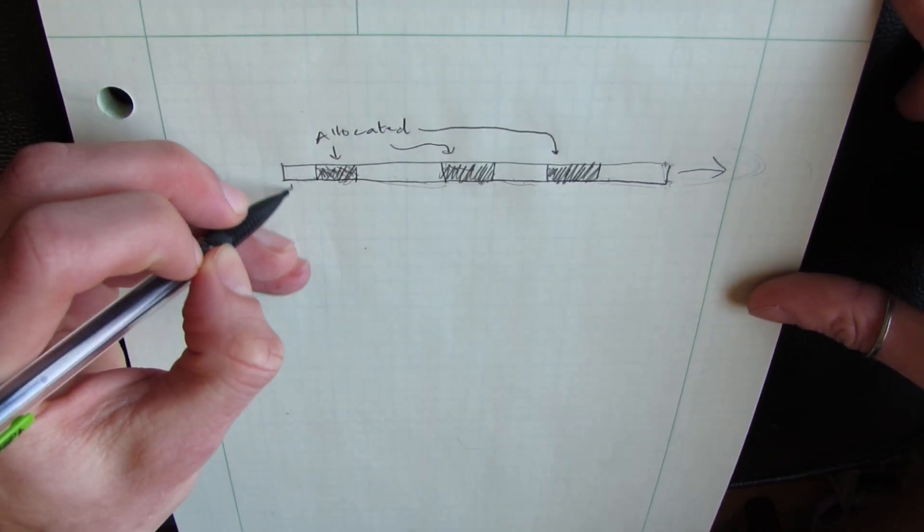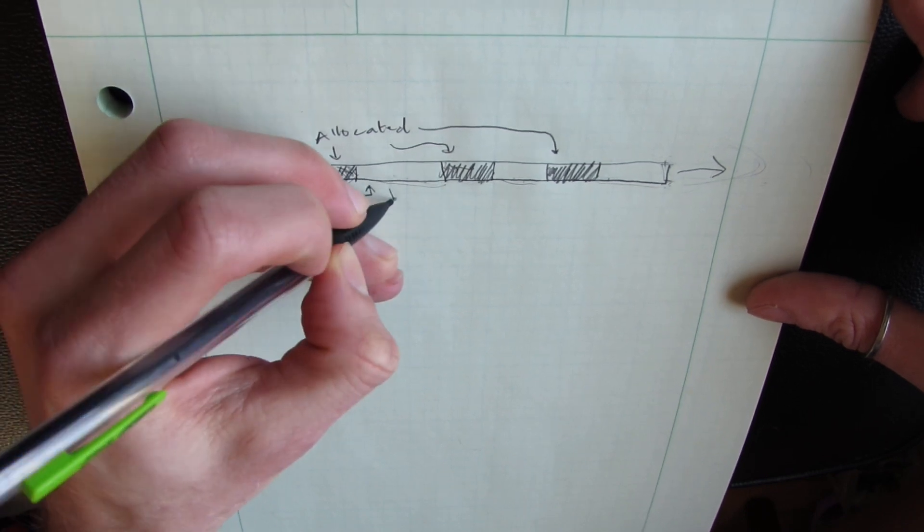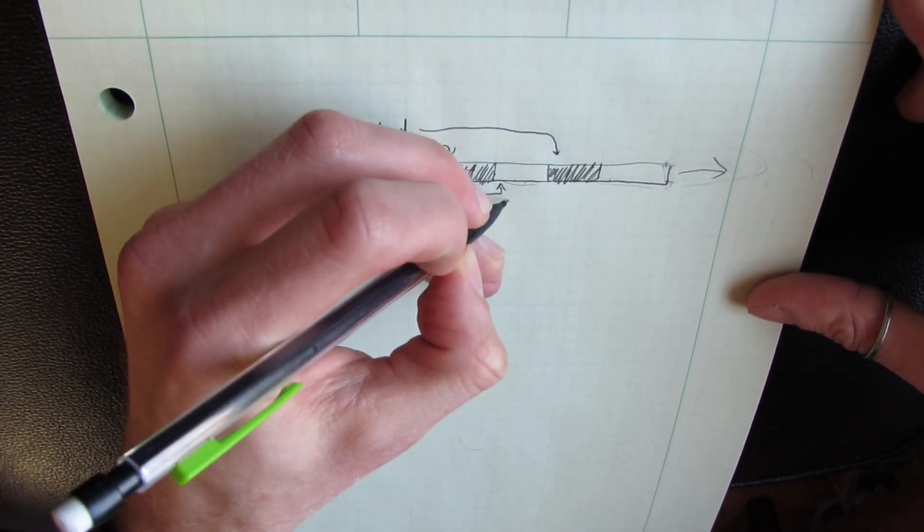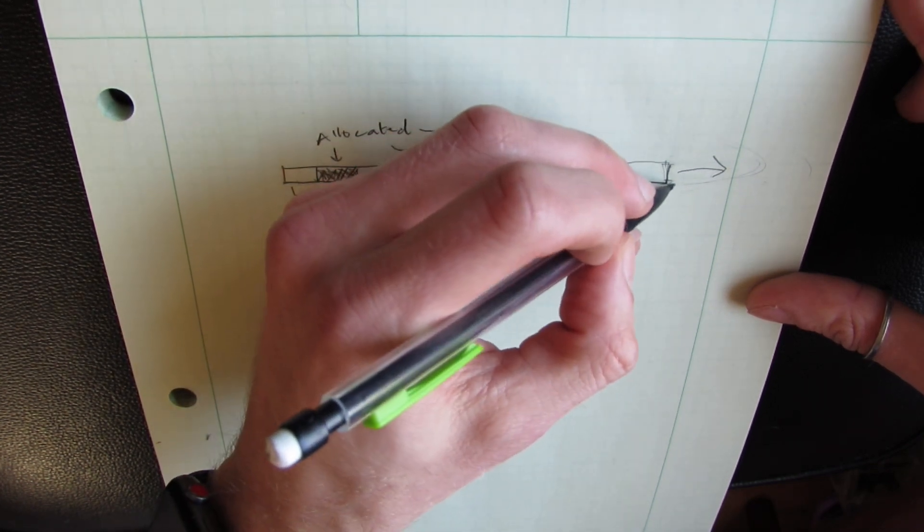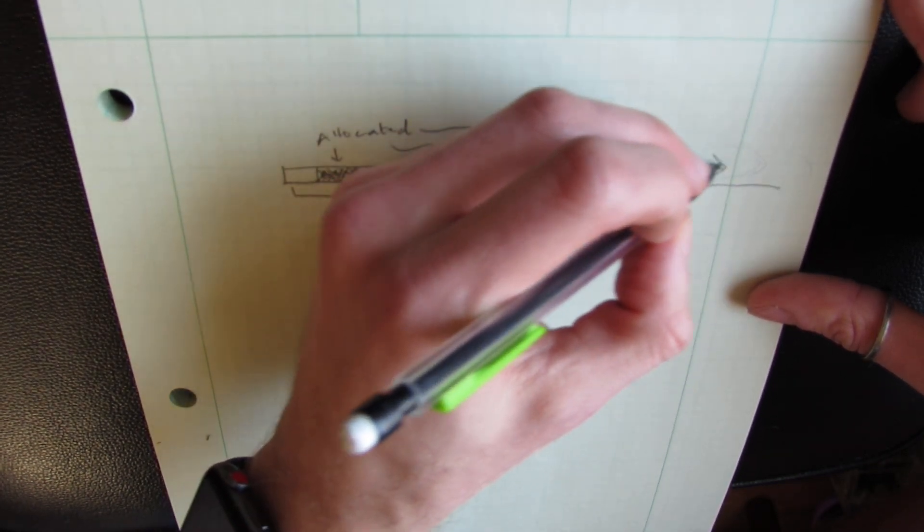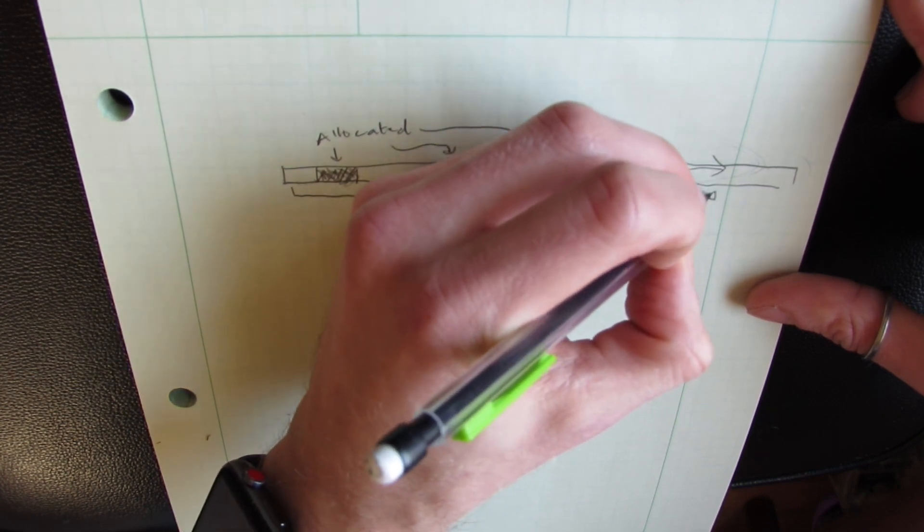So if this is our linked list here, each node in our free list points to the next. And any additional memory allocated here should get added to the free list.